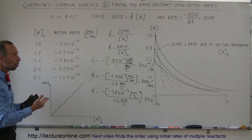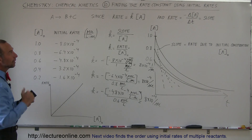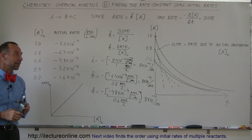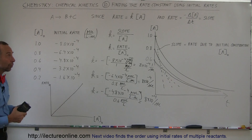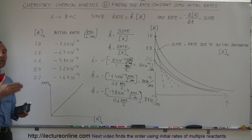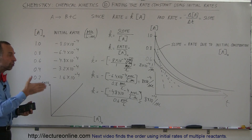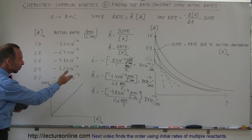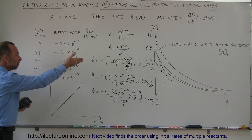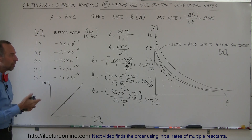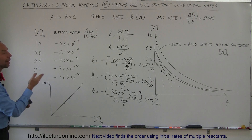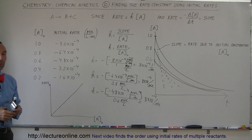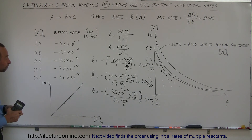That's how we determine what we call the rate constant for each reaction. We tend to do it experimentally — we try different concentrations, see what the initial rate is, and divide the initial rate by the concentration we used. If the number comes out to be the same each time, that becomes what we call the rate constant.